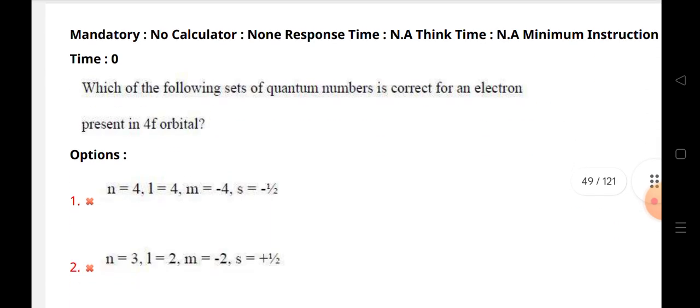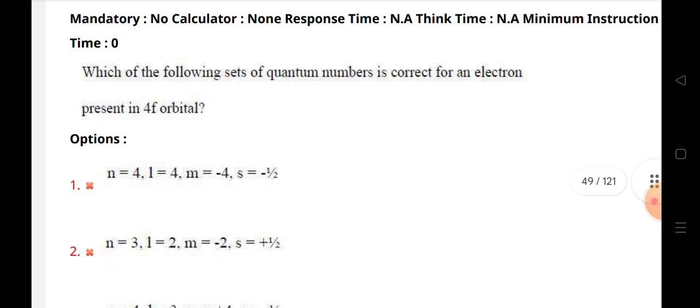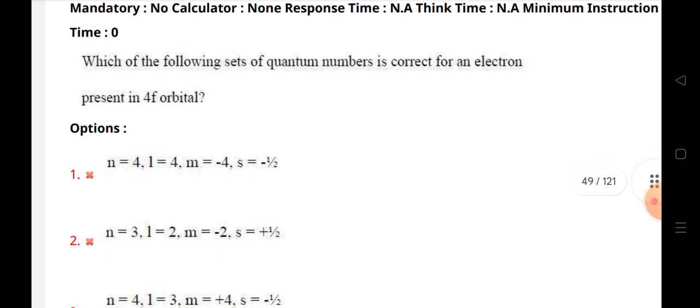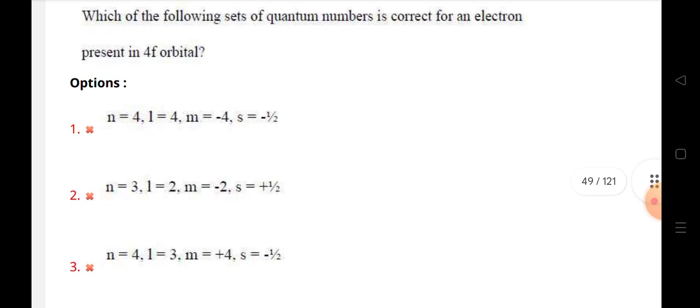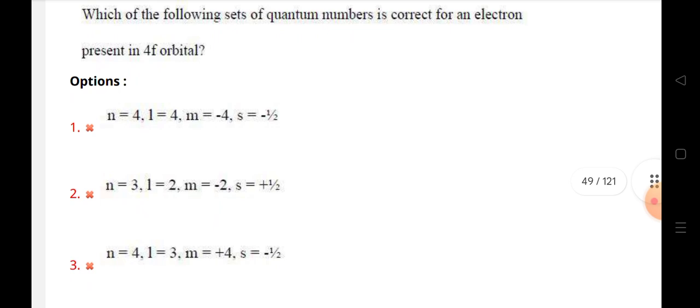Next question: which of the following sets of quantum numbers is correct for an electron present in 4f orbital? The actual quantum number is n equals 4, l equals 3.